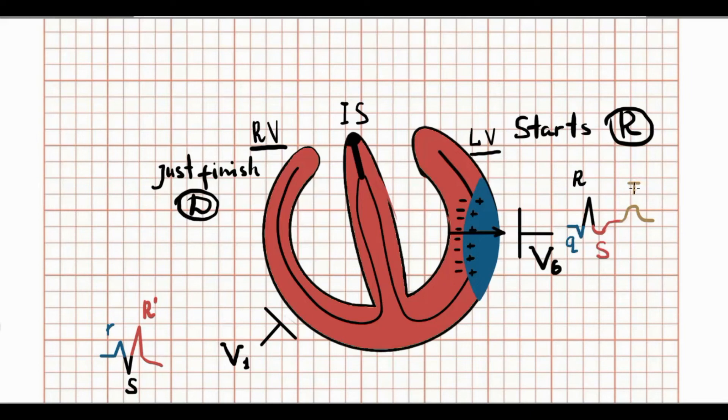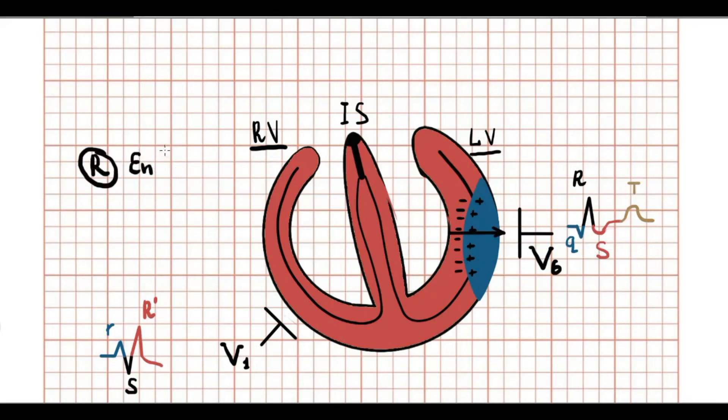As we know due to right bundle branch block, depolarization of right ventricle is slow and achieves the epicardium later. So endocardial part starts repolarization when the epicardium has end of depolarization. So vector of right ventricle repolarization moves from the right to the left. Therefore has the same direction as left ventricle repolarization. So in V1 T wave is negative.